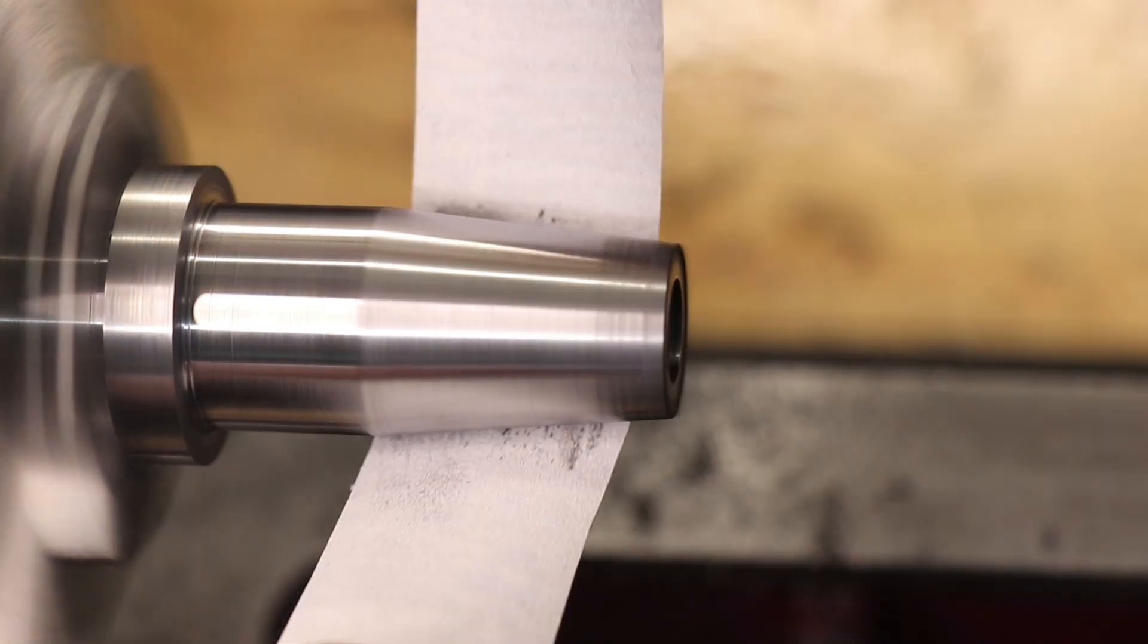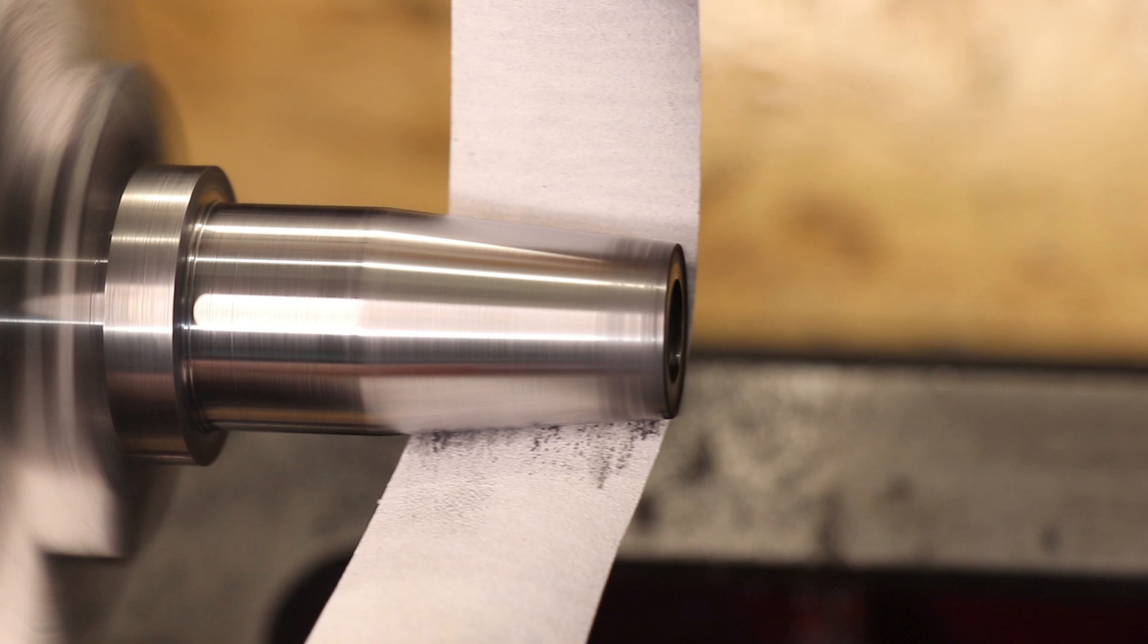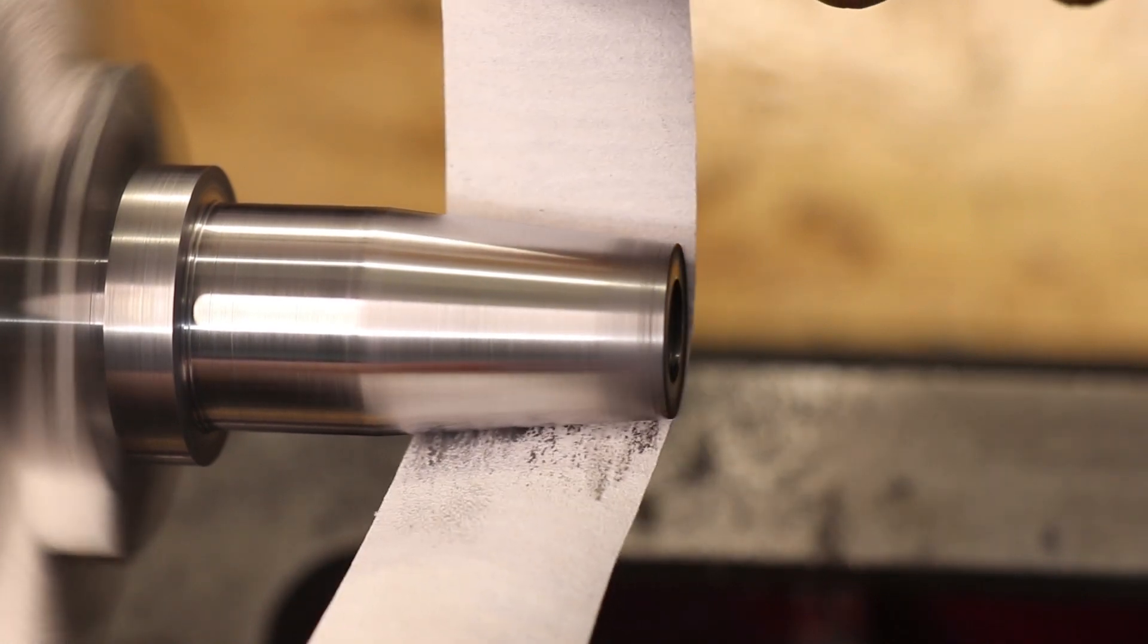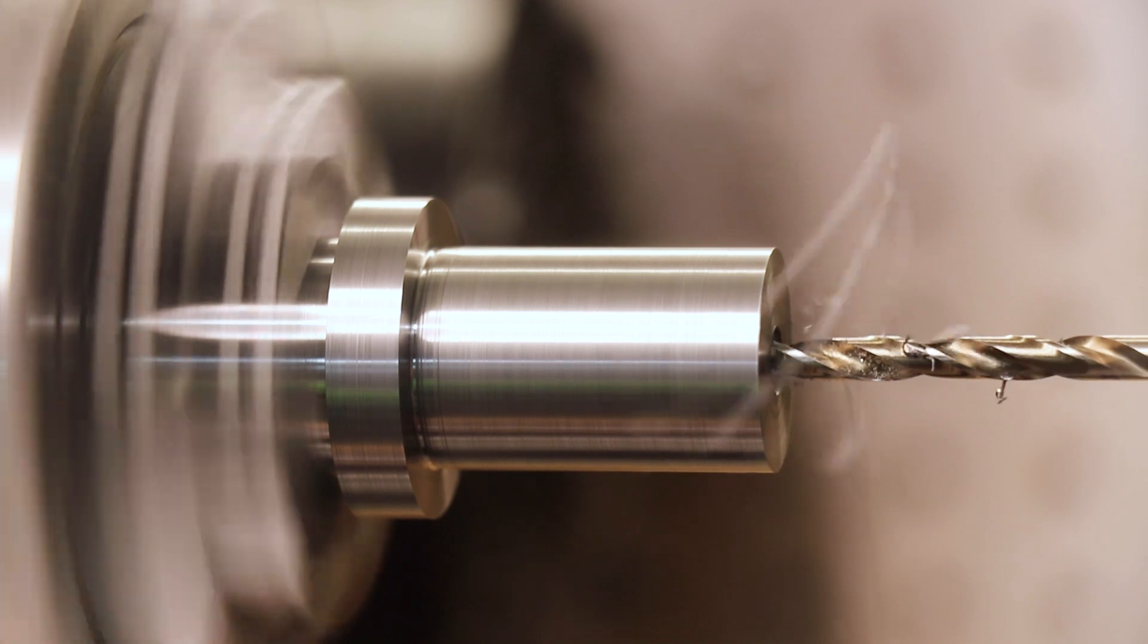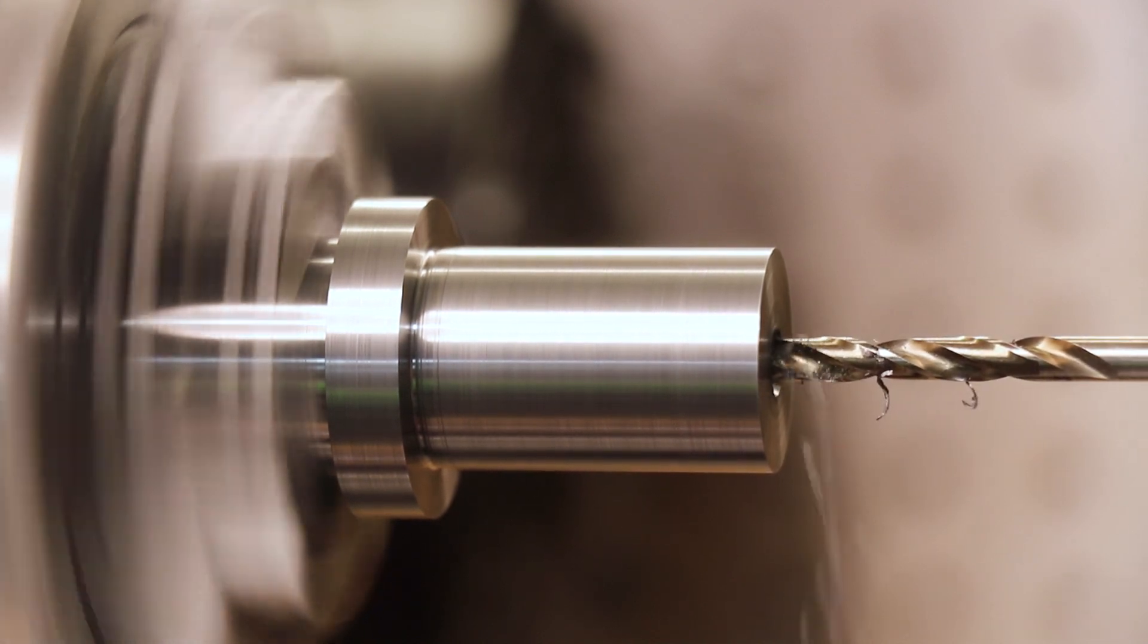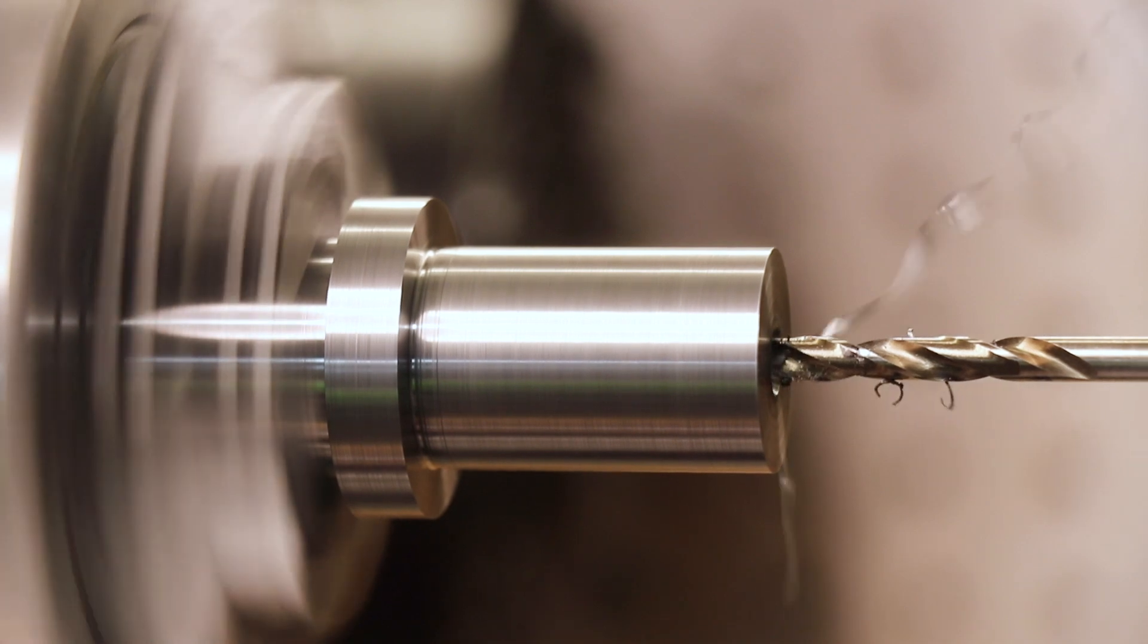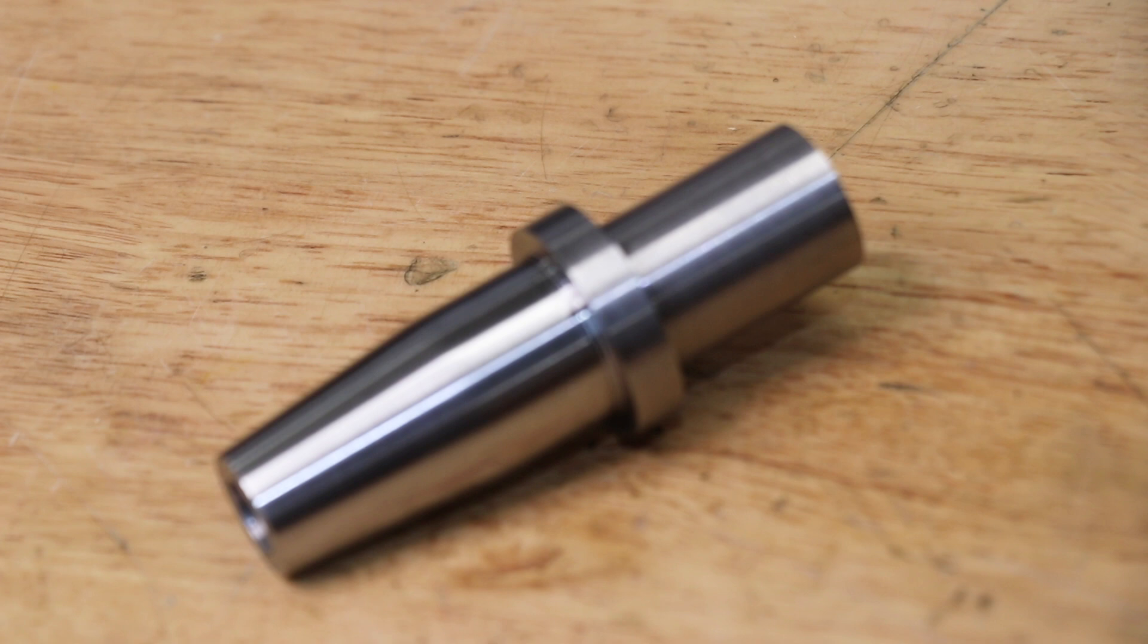I'll clean up the taper with a file and then some 320 grit. And I forgot to cover the ways so I'll have to give it a quick clean before I use the lathe. The final thing that I'll do is drill a hole through the shank to help vent any air trapped between the end mill and the bottom of the hole. And that is the tool holder done.